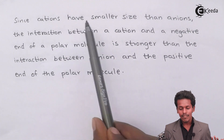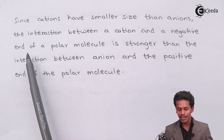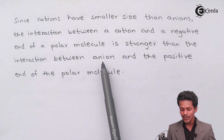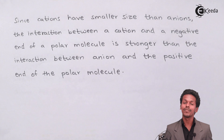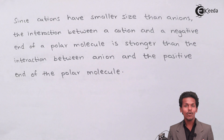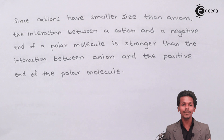Since cations have a smaller size than anions, the interaction between a cation and the negative end of the polar molecule is stronger than the interaction between an anion and the positive end of the polar molecule. Let us look at this through the NaCl example.